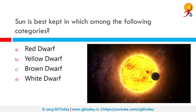In which category is the Sun best kept? We already know the Sun is a yellow star, so the correct answer is yellow dwarf. The Sun is a variable star — a big ball of glowing gas that evolves over time. This yellow dwarf is a hellish ball constantly shaken by huge explosions that send massive amounts of matter into space.